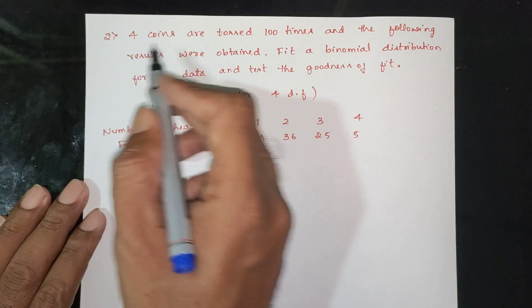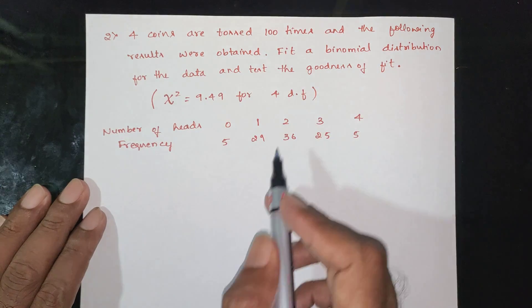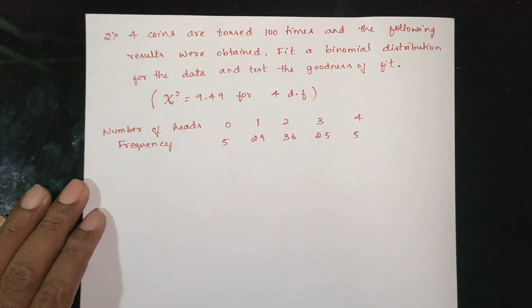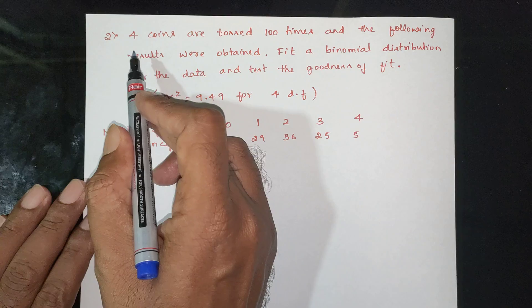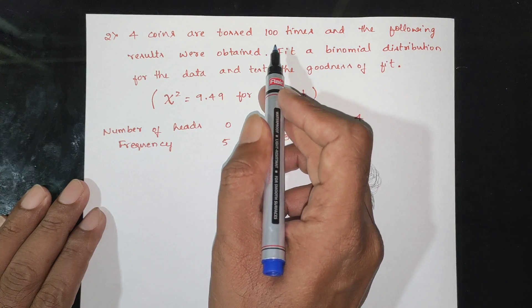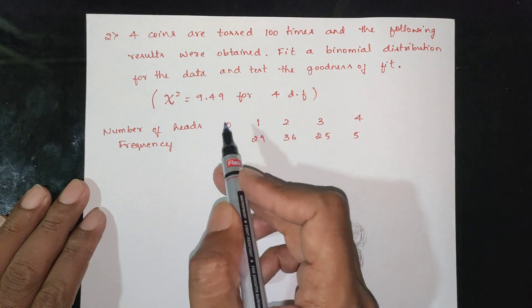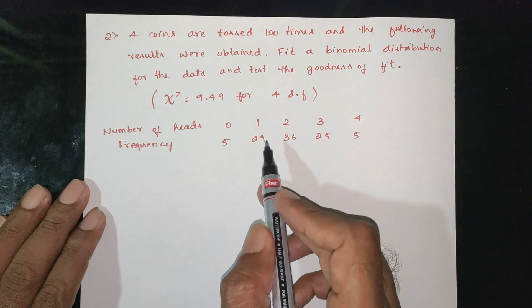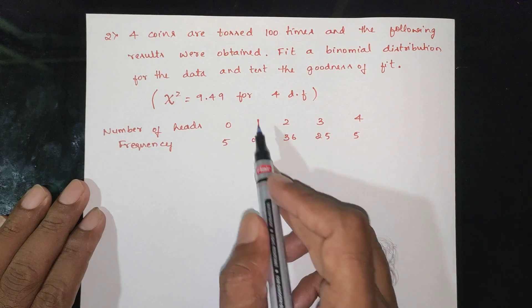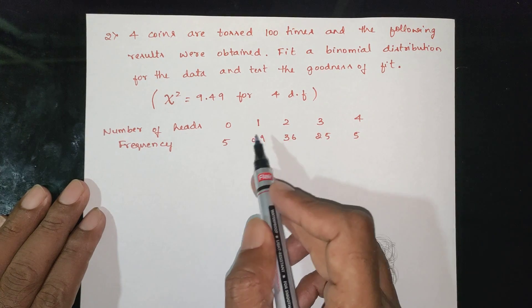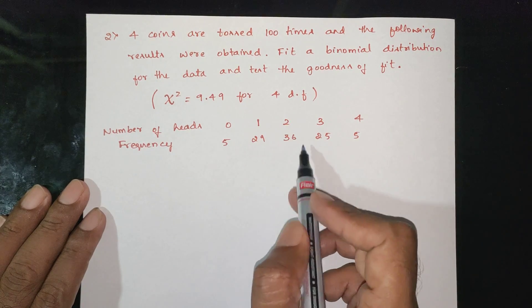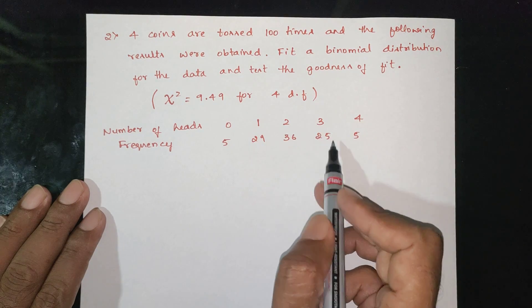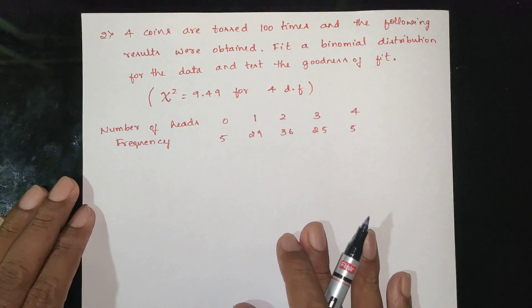Four coins are tossed 100 times. The possibilities for x values are: x=0 with frequency 5, x=1 with frequency 29, x=2 with frequency 36, x=3 with frequency 25, x=4 with frequency 5.